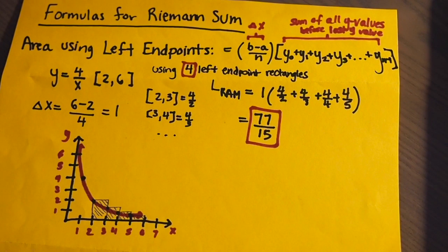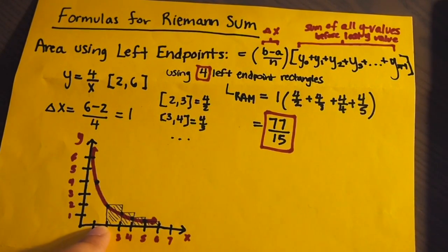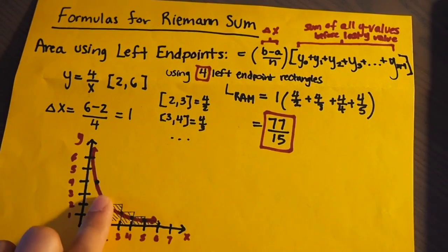Since delta x equals 1, the way that we can find the sum of all the y values using the left endpoint is by finding the intervals. So because our a equals 2, that means our first interval would be from 2 to 3 because 2 plus 1 equals 3. So our next interval would be 3 to 4 and then 4 to 5 and 5 to 6. Because you want the left Riemann sum, which means that you want the left endpoints.